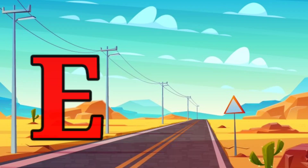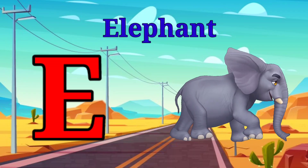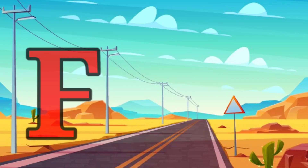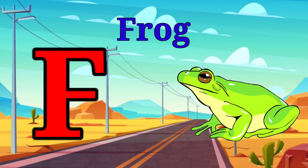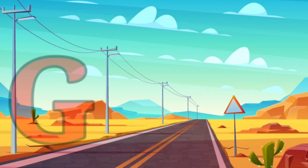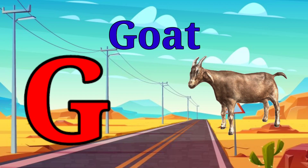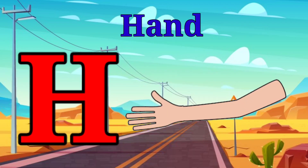E is for elephant, e-e-elephant. F is for frog, f-f-frog. G is for goat, g-g-goat. H is for hand, h-h-hand.